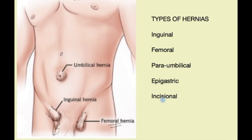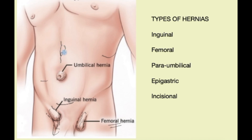Hernias typically occur at sites of weakness, and if people have had an operation for whatever reason, those incisions are sites of weakness. Common examples include an appendix incision, a Pfannenstiel incision, a C-section scar, a midline scar, or operations on the kidney. At any of these sites, a hernia may occur over time, giving rise to a lump, and the rest of the symptoms are fairly typical.